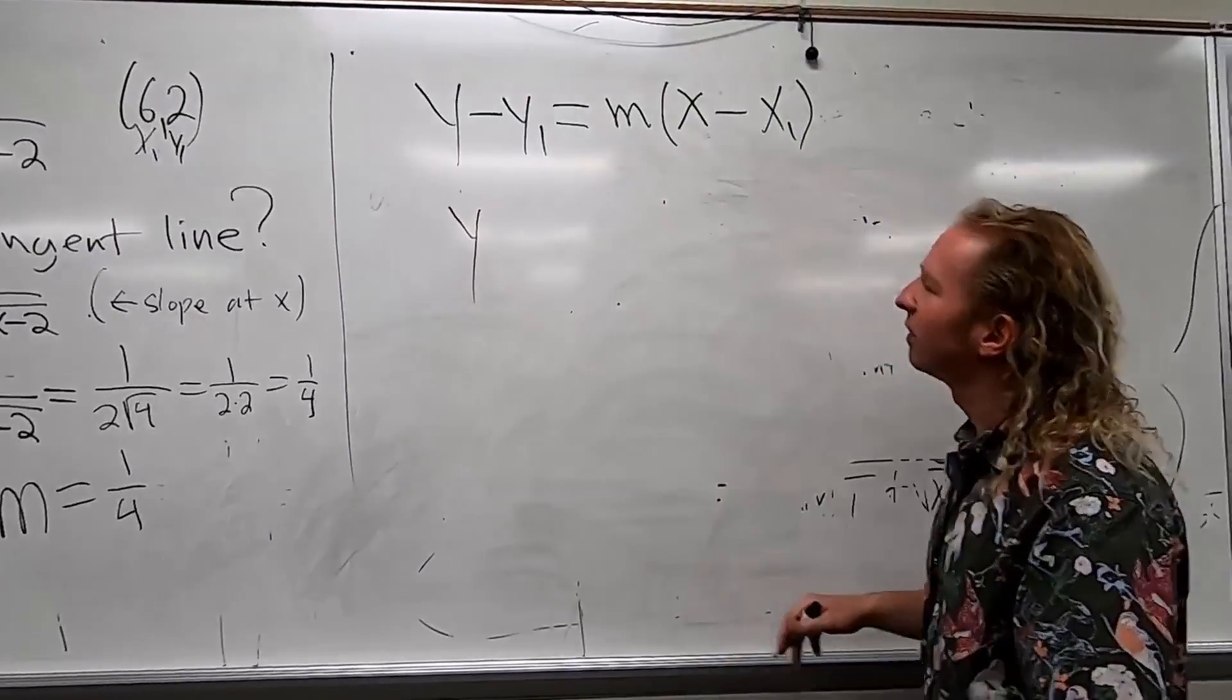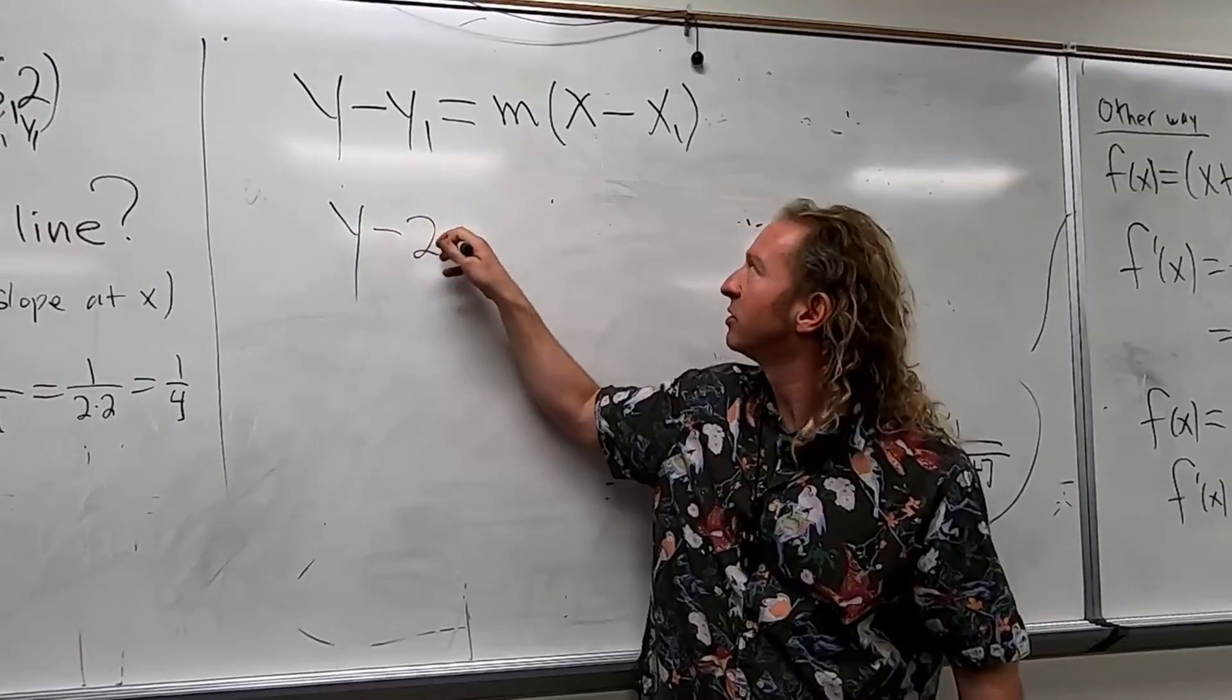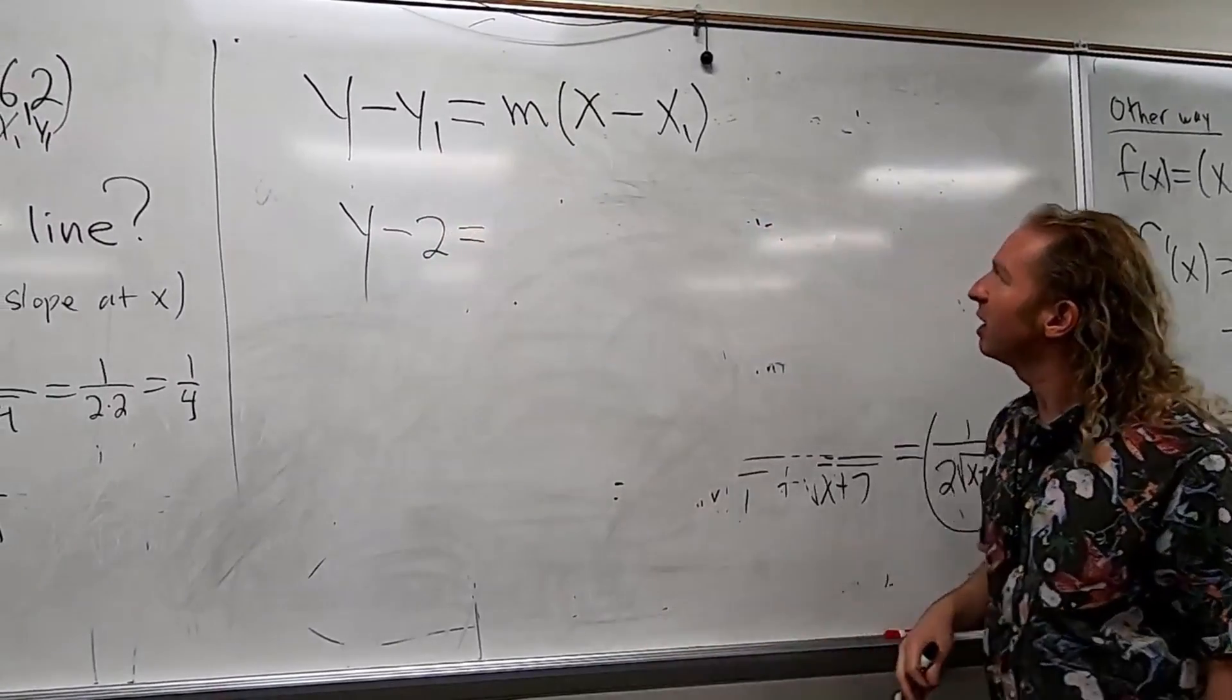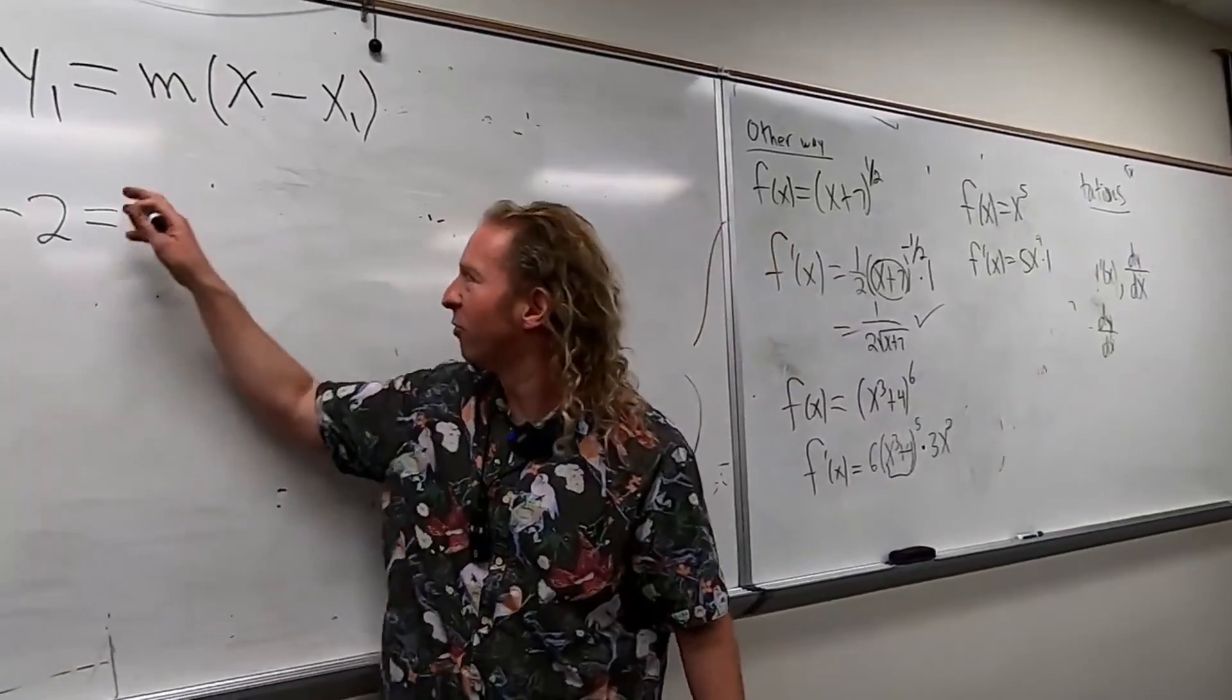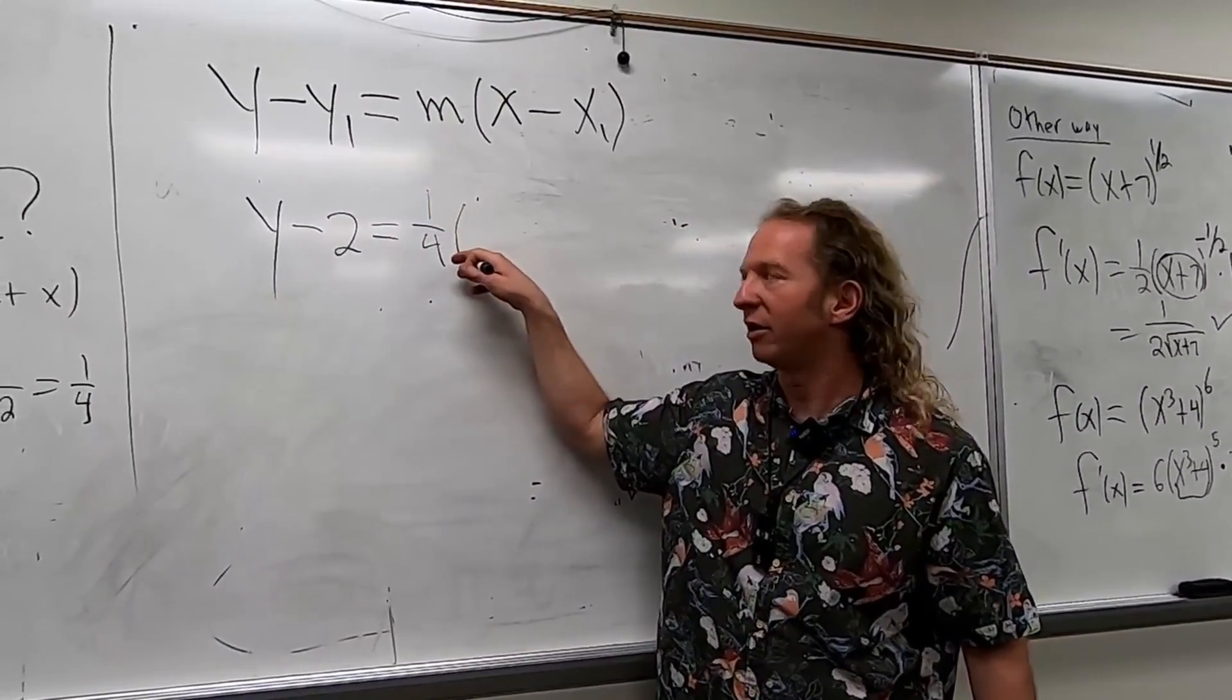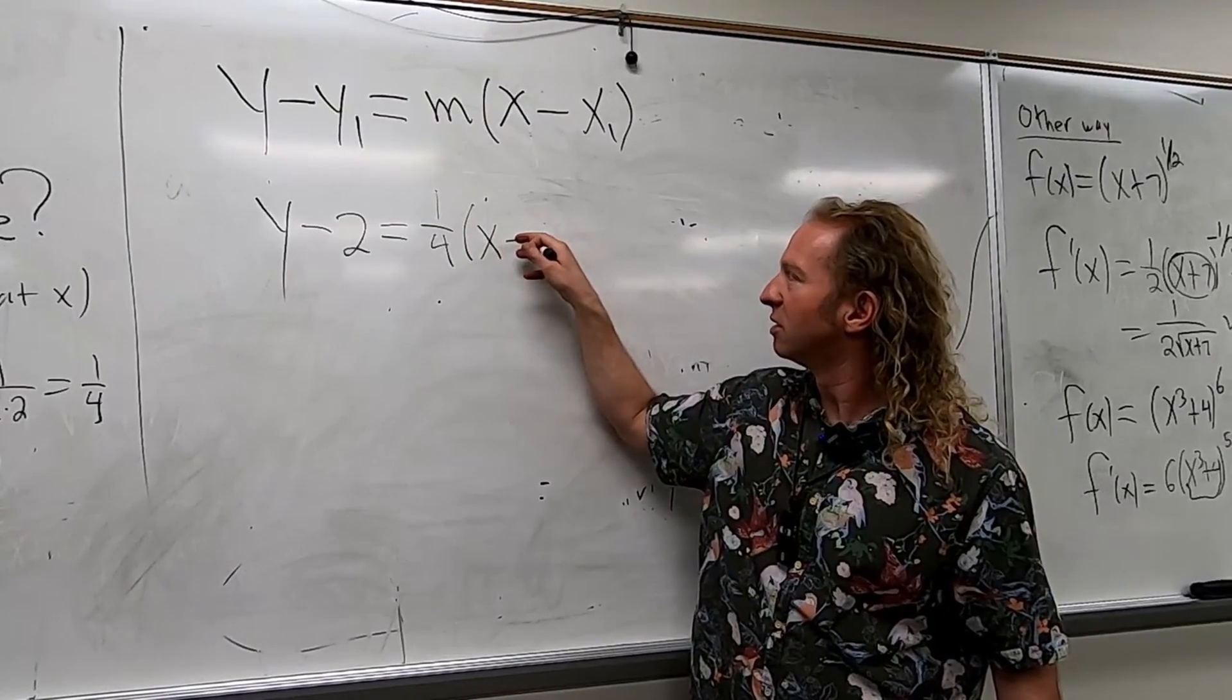Just plug it in. So it'll be y minus 2. Yeah, minus 2. Is that right? Minus 2. And then what was m? One-fourth? Oh, there it is. One-fourth. Thanks. I zoned out. One-fourth. And then x minus?